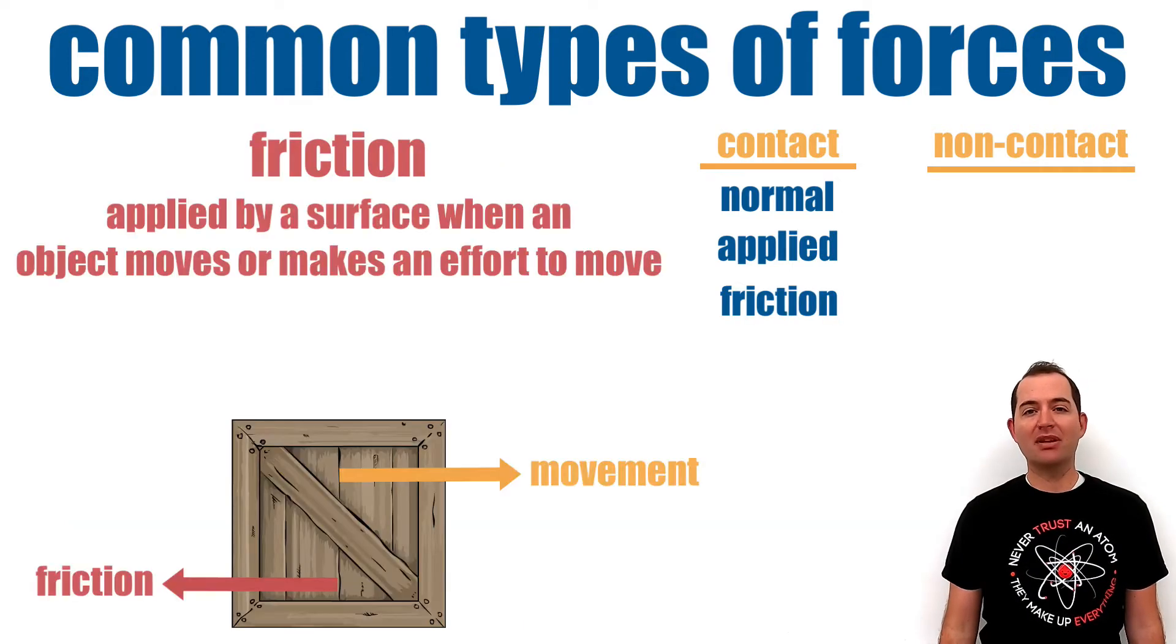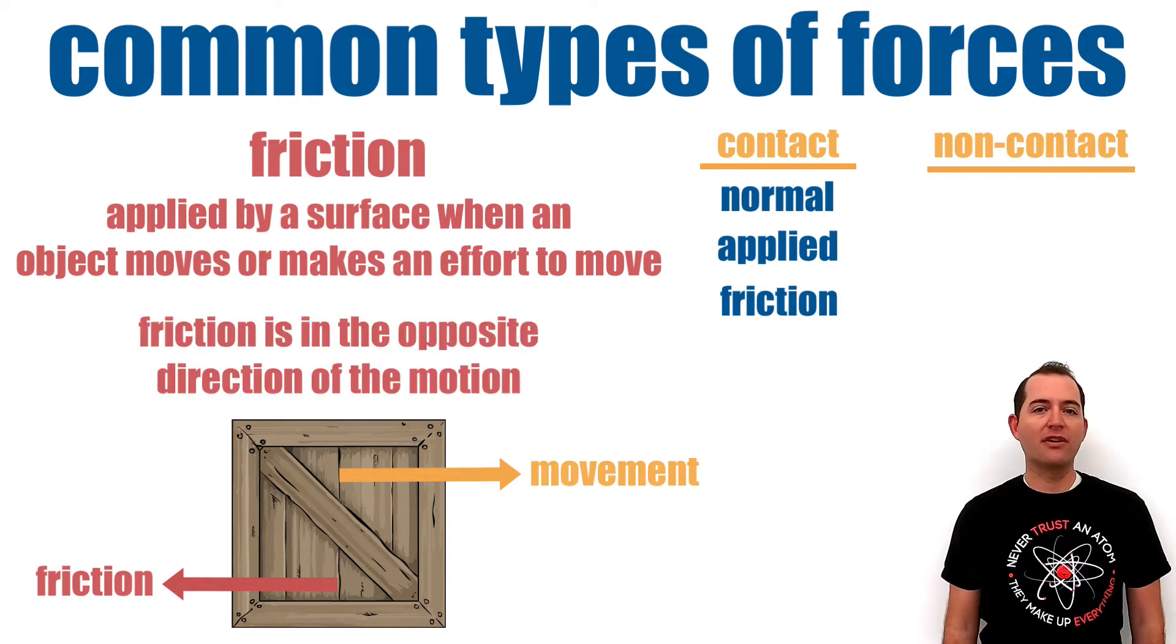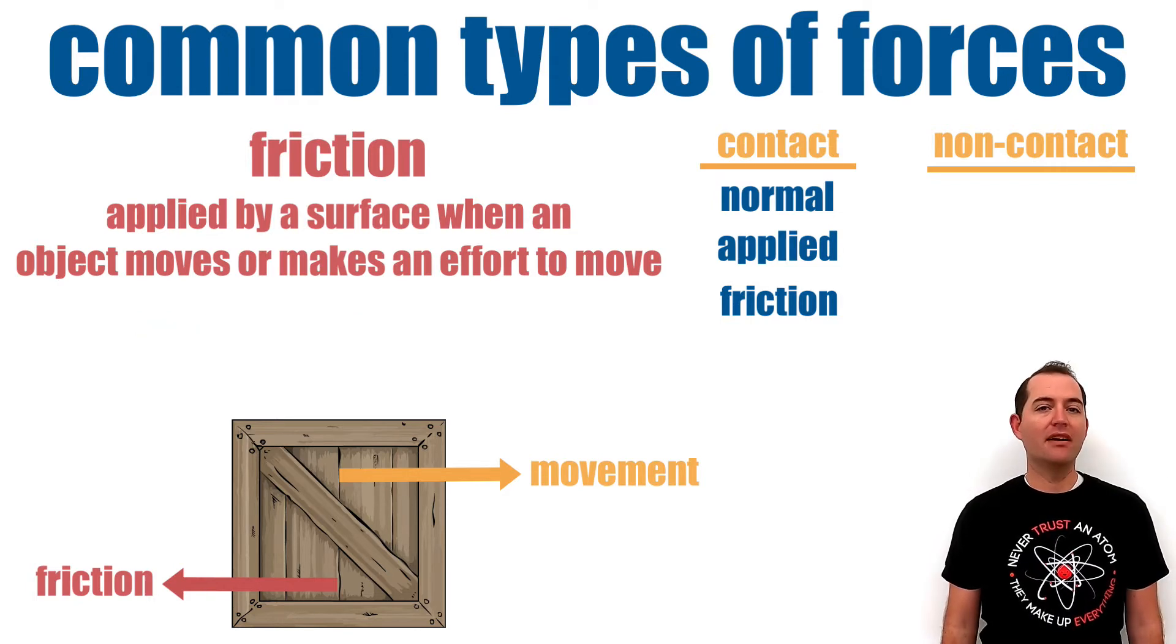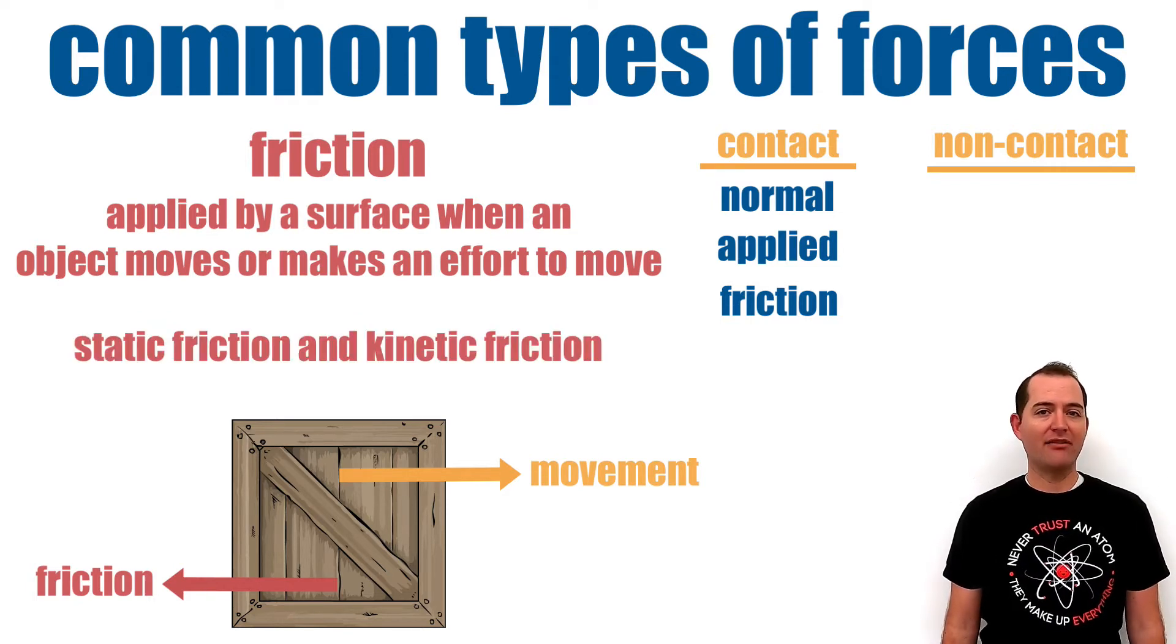Friction is a force that is applied by a surface when an object moves across it or makes an effort to move across it. Friction will always be in the opposite direction of the motion. There are two types of friction, static friction and kinetic friction. Static friction acts when the objects are stationary and kinetic friction acts when objects are moving. Static friction is always greater than kinetic friction between two surfaces.